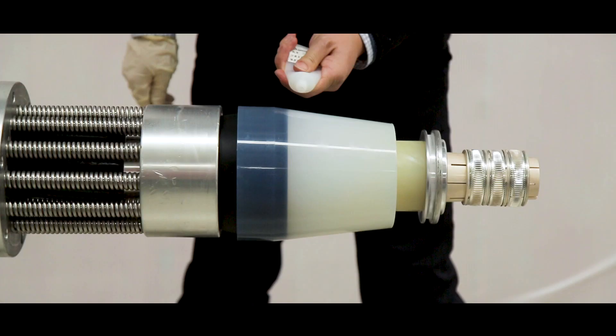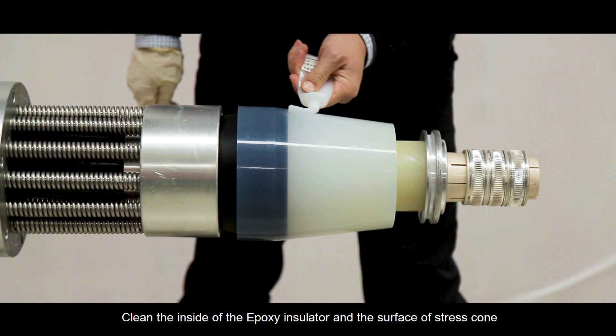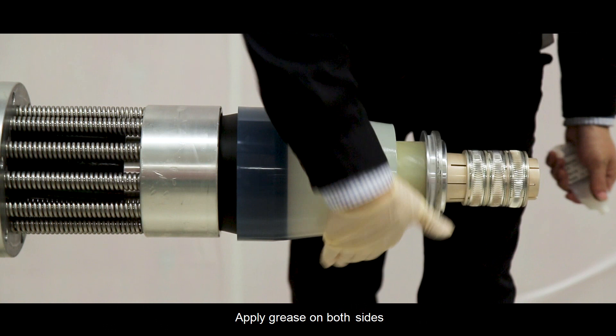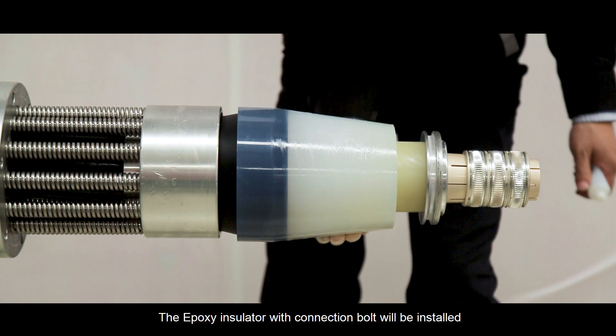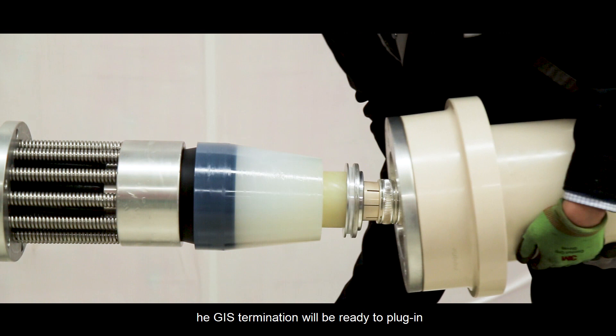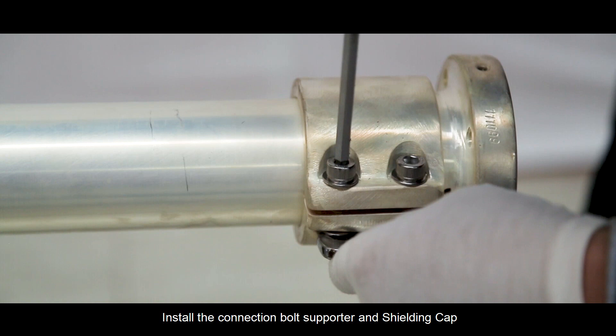Clean the inside of the epoxy insulator and the surface of stress cone. Apply grease on both sides. The epoxy insulator with connection bolt will be installed on the GIS equipment and fixed with flange. After that, the GIS termination will be ready to plug in. Install the connection bolt supporter and shielding cap. Fix them with correct nuts.